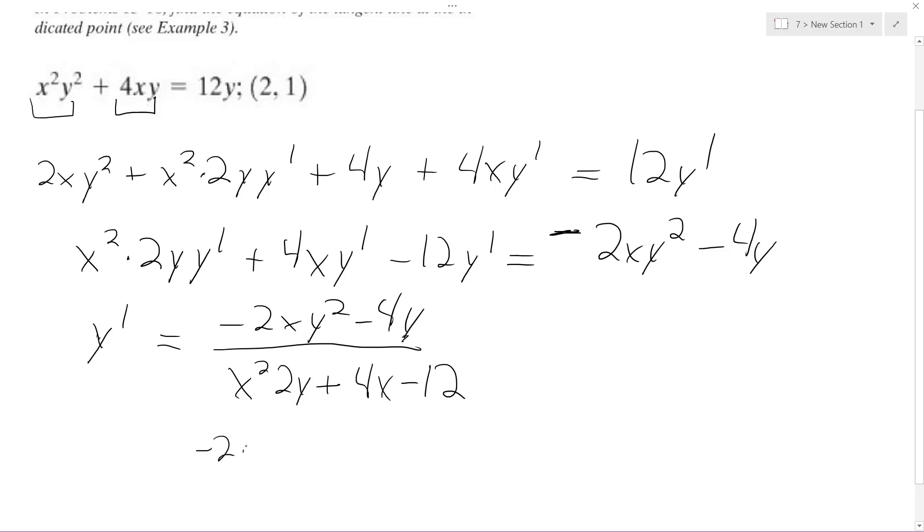So I get negative 2 times 2 times 1 squared minus 4 times 2 all over 2 squared times 2 times 1 plus 4 times 2 minus 12.